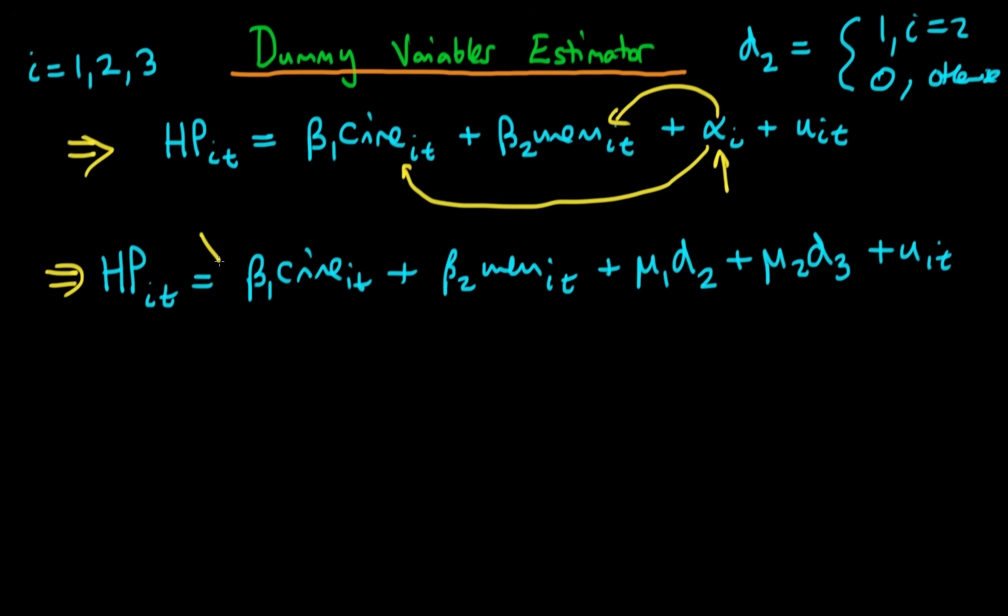Technically in order to allow city one to have an intercept we should also include a parameter beta naught in here which we would add on to our regression. But for our purposes I'm just going to forget about that for now because essentially it's doing a very similar thing to what we have here anyway.